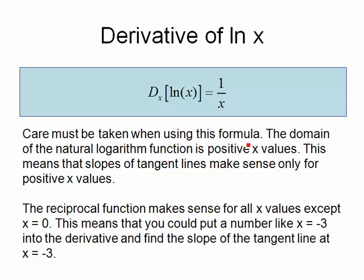But the expression on the right, which is the reciprocal function, makes sense for all x values except x equals 0. This means that you could put a number like x equals minus 3 into the derivative and get negative 1 third.